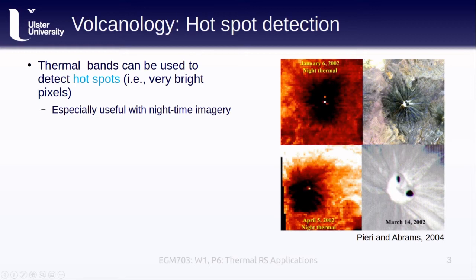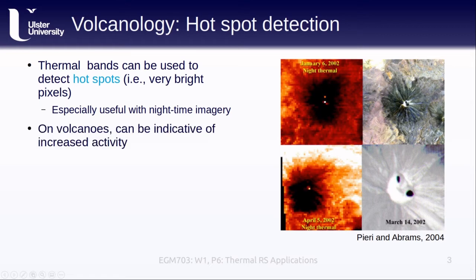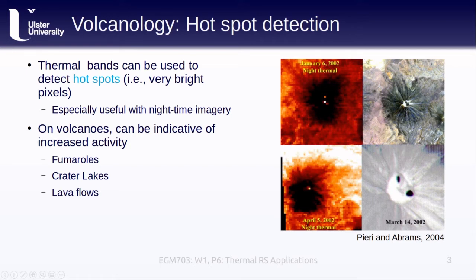In nighttime images like these, hotspots tend to stand out even more because of the diurnal cycles covered earlier this week. On volcanoes, hotspots can be indicative of increased activity—for example, active fumaroles where hot volcanic gases vent into the atmosphere. They can also indicate crater lakes or active lava flows. The examples shown here are from Chiliques volcano in Chile, which started to show increased thermal activity in 2002, possibly indicative of increased activity before an eruption. As of now, the volcano is still dormant.